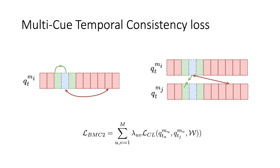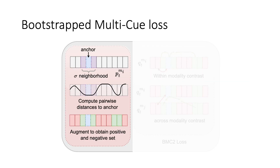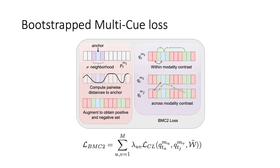Instead of positives coming from RGB alone, we propose to use features from different modalities in the contrastive framework. This helps the model distill information from different modalities while still being able to do single modality inference. One issue with this loss is that the temporal window of positives need not be accurate, since similar steps might repeat in the future. So we propose to augment the window. Since raw features are extracted from pre-trained models, they might already have some signal on what might be false negatives. We propose to compute pairwise distance of all raw features to the anchor and add them to the positive set if the distance is within a threshold. Including our proposed fixes, the final loss augments the positive set and applies CIDM loss on features extracted from multiple queues.